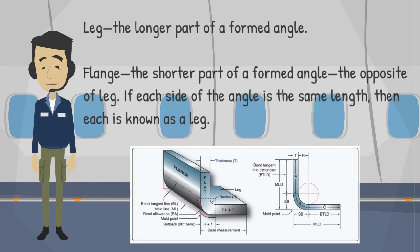Leg: the longer part of a formed angle. Flange: the shorter part of a formed angle — the opposite of leg. If each side of the angle is the same length, then each is known as a leg.